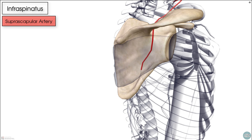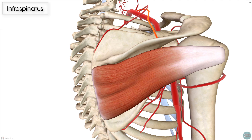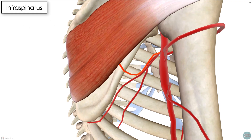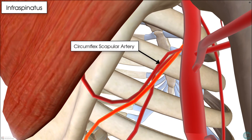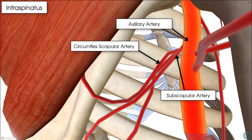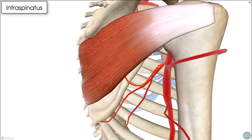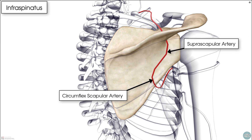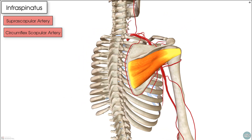The second artery is the circumflex scapular artery. The circumflex scapular artery originates as the first branch from the subscapular artery, and that subscapular artery comes from the large axillary artery. The circumflex scapular artery from its origin then runs down the lateral border of the scapula, and as it runs to the posterior scapula it anastomoses with the suprascapular artery — and those two arteries are the ones supplying the infraspinatus muscle.